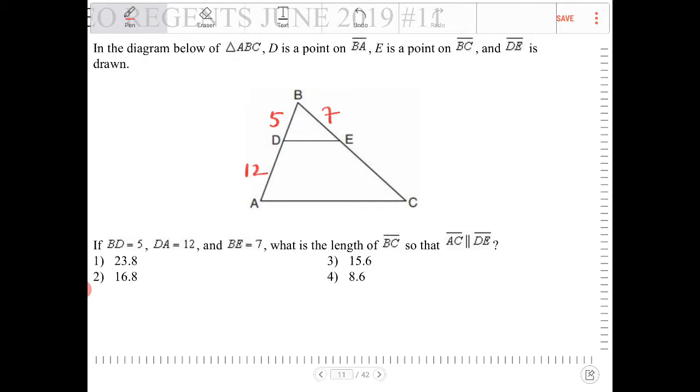So we can use the side splitter theorem where we can even set up a proportion. I think I'll do this using a set of proportions here. So we're looking for a length of BC, right? So let's call that X.